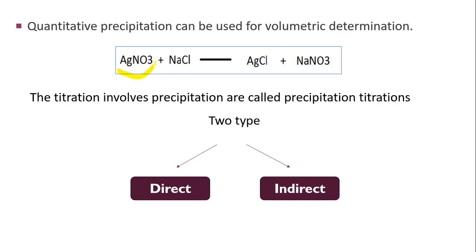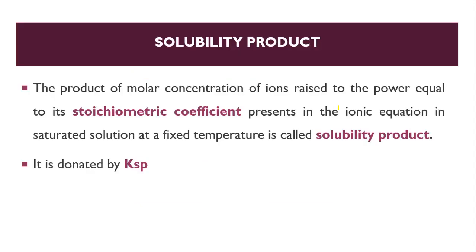For example, when silver nitrate reacts with NaCl, you get AgCl as a precipitate and sodium nitrate as another product. The Ag reacts with Cl, giving a precipitate of AgCl, from which you can find either the amount of silver or the amount of chloride present in your analyte. Titrations involving precipitation are called precipitation titrations. There are two types: direct method and indirect method.